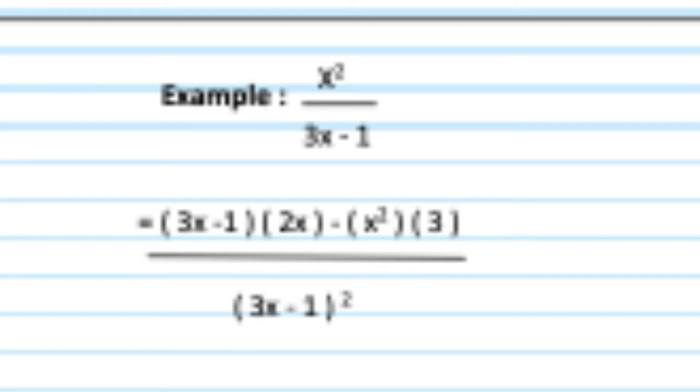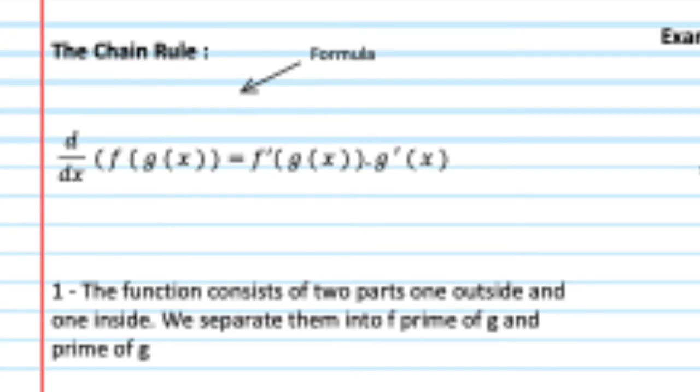Now, for the last three, the chain rule is a bit different. It's not really a common rule, but it is necessary. So, for this, it states that dy over dx will equal to f prime of g(x) times the prime of g(x). And in simpler terms, the function consists of two parts, one outside and one inside. We separate them into their primes, or their derivatives, and then plug them as such.